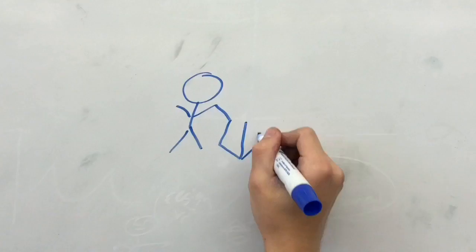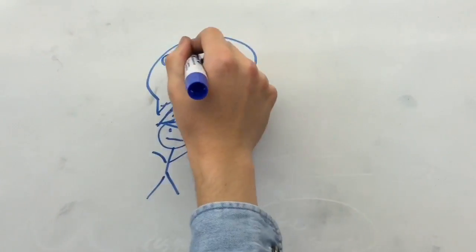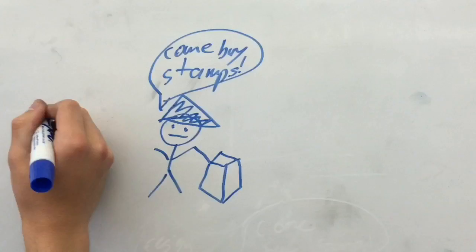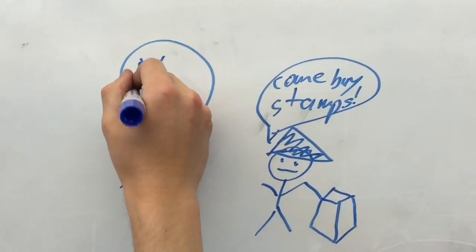On the day the Stamp Act was to go into effect, angry colonists and members of the Stamp Act Congress forced Stamp Act agents to resign. Without the agents to give out the stamps, the Stamp Act did not work.